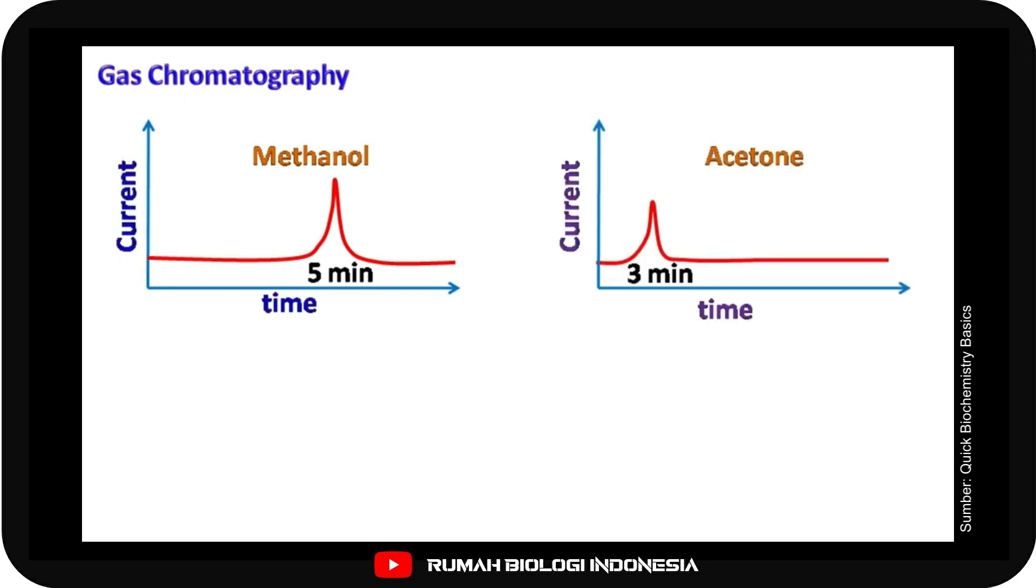Next, we run acetone as our sample and the peak of acetone is obtained at 3 minutes. Next, we run unknown sample and we get this chromatogram.